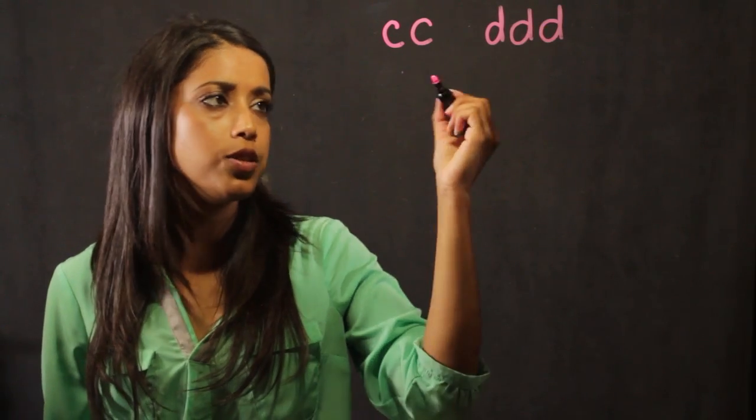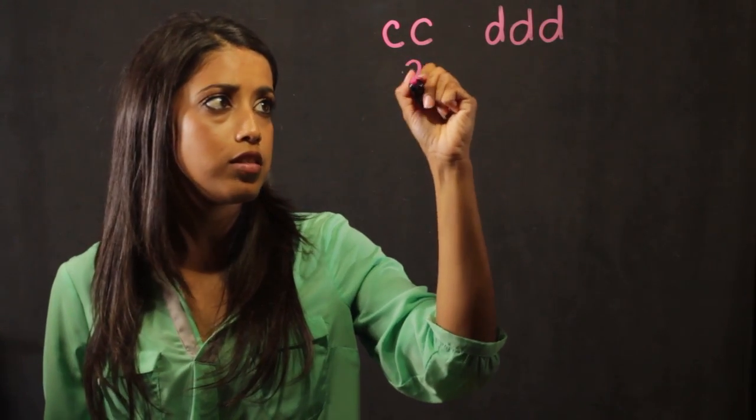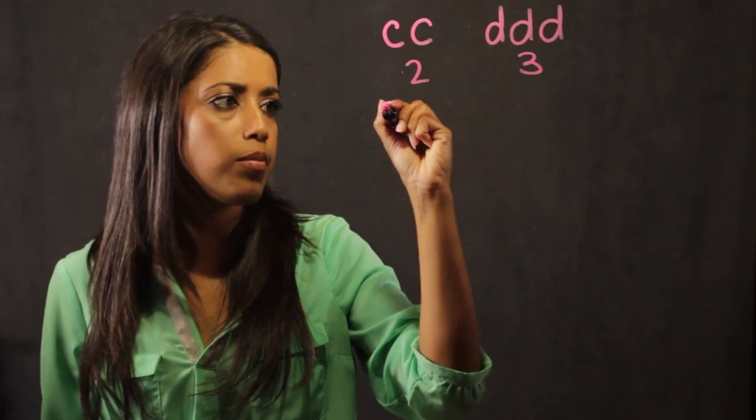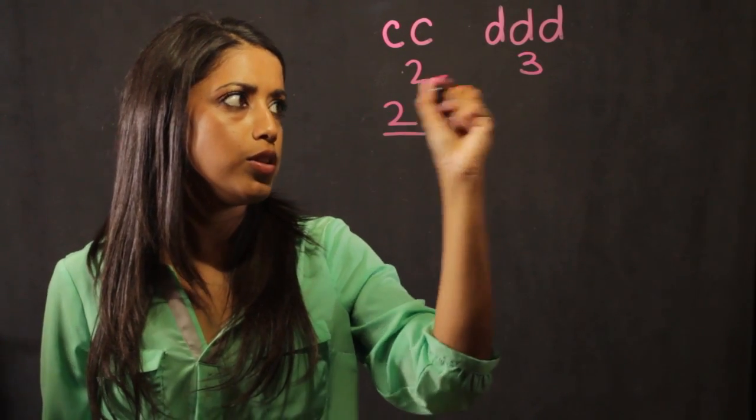As a ratio, what I do is I just count the number of C's, two, count the number of dogs, three, and I put the one that comes first on top. So I get this ratio of two to three.